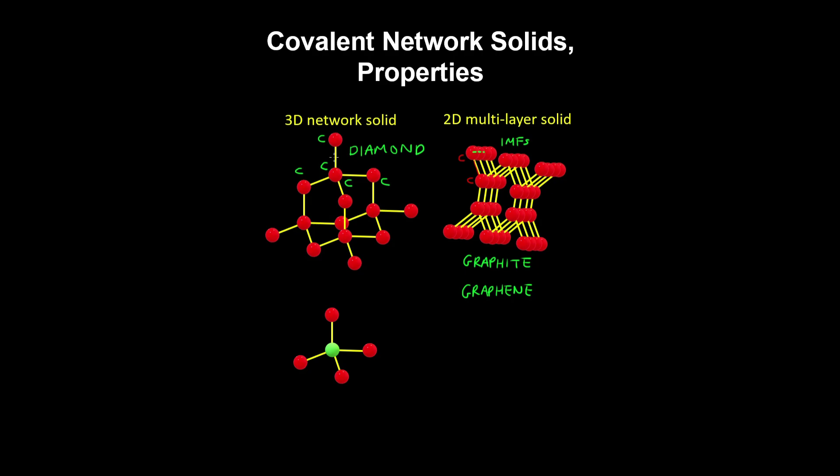So covalent network solids can consist of one element, such as diamond, or multiple elements, such as silicon carbide, where one silicon is bonded to four carbons in a tetrahedral arrangement similar to diamond.